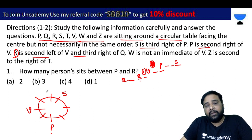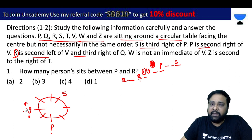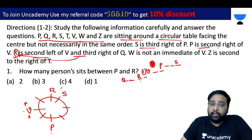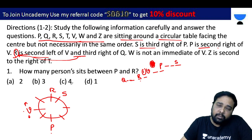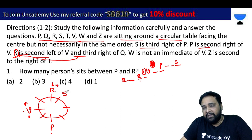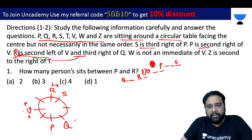R is second left of V. V is on the left side at the second position. R is the right of Q. Counting positions: from Q's right side — 1, 2, 3 — we get R.